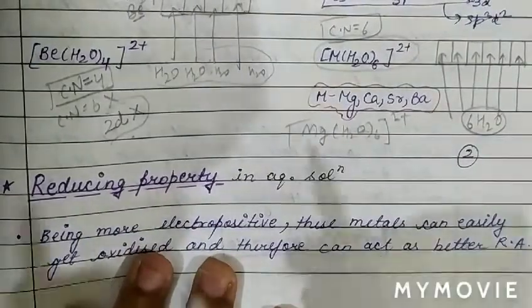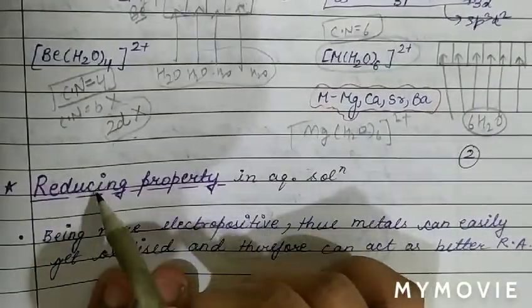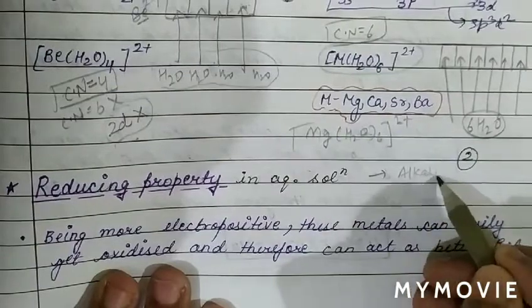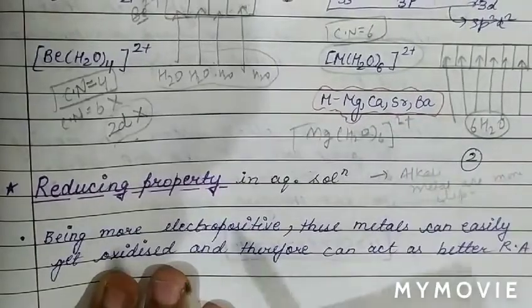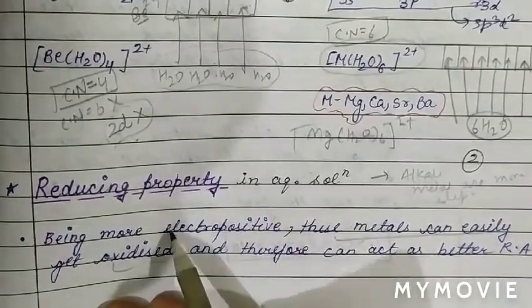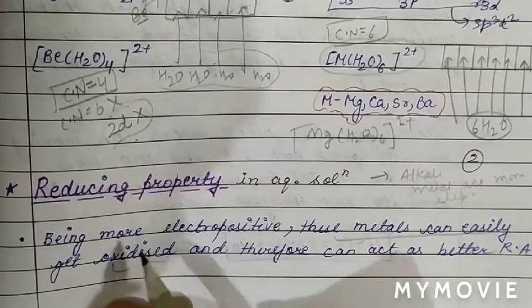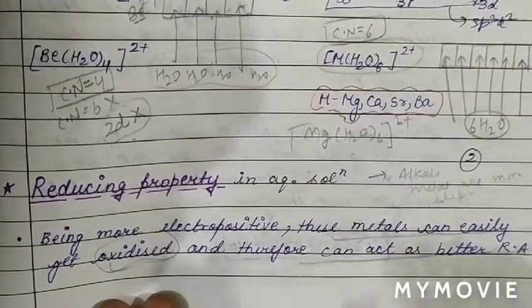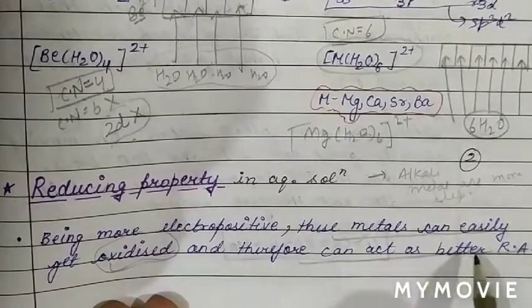The next property we are going to discuss is reducing property in aqueous solution. Alkali metals are more electropositive in nature, so these metals can easily get oxidized. If self-oxidizing tendency is more, then they will behave as a better reducing agent for others.